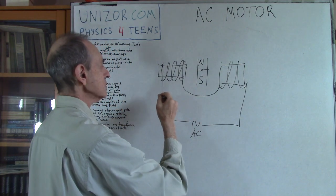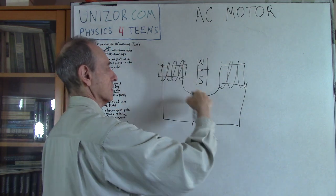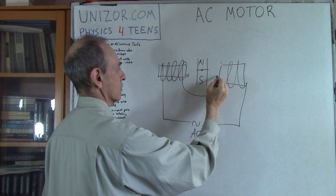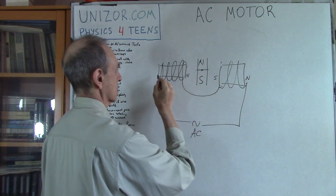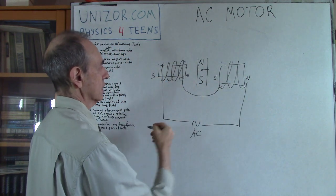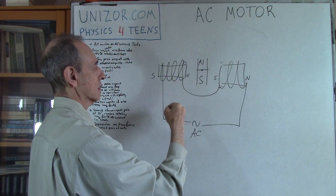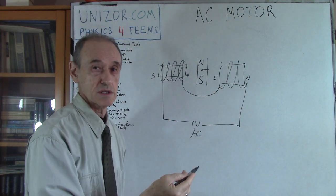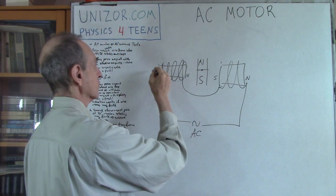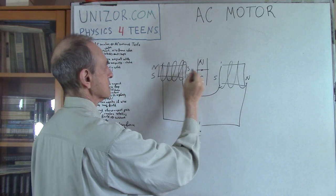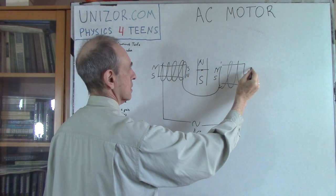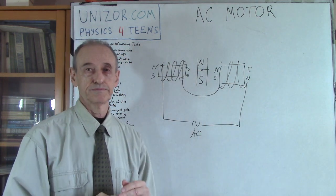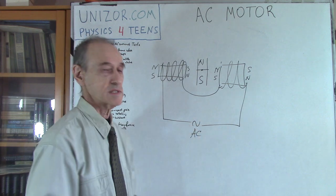If the direction of the current is in one direction, we will have north-south, north-south oriented electromagnets. If the direction is in another way — it's AC — so we're changing direction like 50 or 60 times per second, then it will alternate. So what happens if I just turn the AC on?